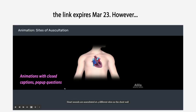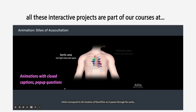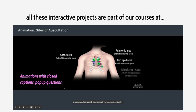Heart sounds are auscultated at four different sites on the chest wall which correspond to the location of blood flow as it passes through the aortic, pulmonic, tricuspid, and mitral valves respectively. This is how similar defects associated with different valves are differentiated.